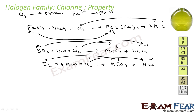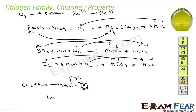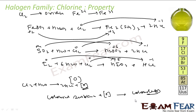Chlorine water is a good bleaching agent because it gives nascent oxygen: Cl2 + H2O → 2HCl + [O]. If you have a colored substance and apply this nascent oxygen, it becomes colorless. This is a permanent bleaching effect.